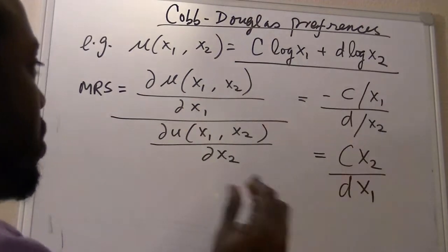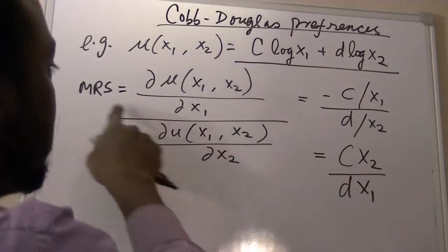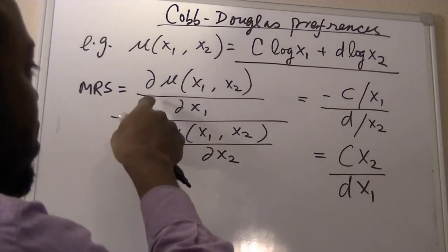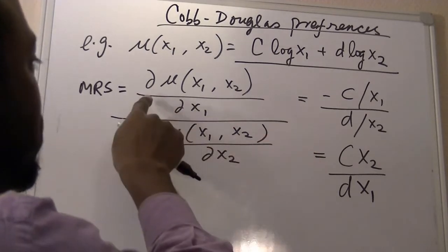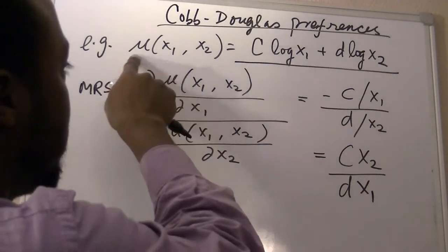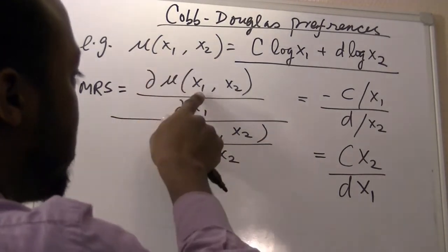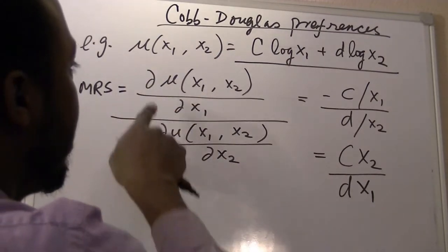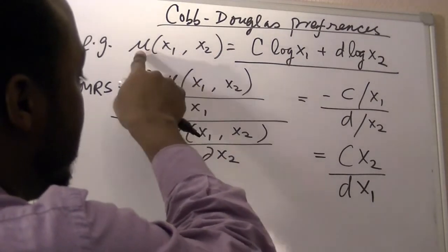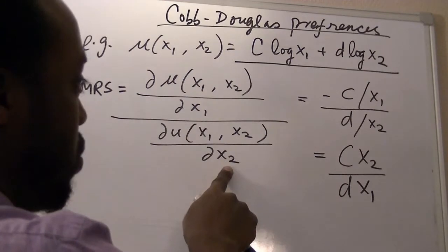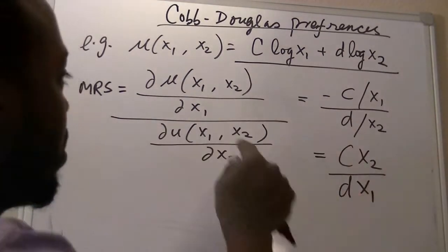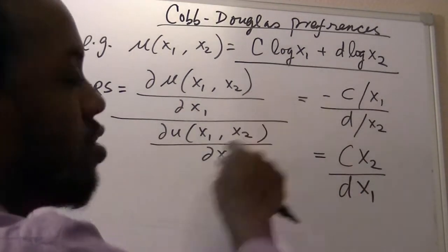We said in another video, the formula to get marginal rate of substitution is as follows. We take the partial derivative of this function with respect to x1 and divide the partial derivative of this function with respect to x2. In other words, we are dividing the two marginal utilities.